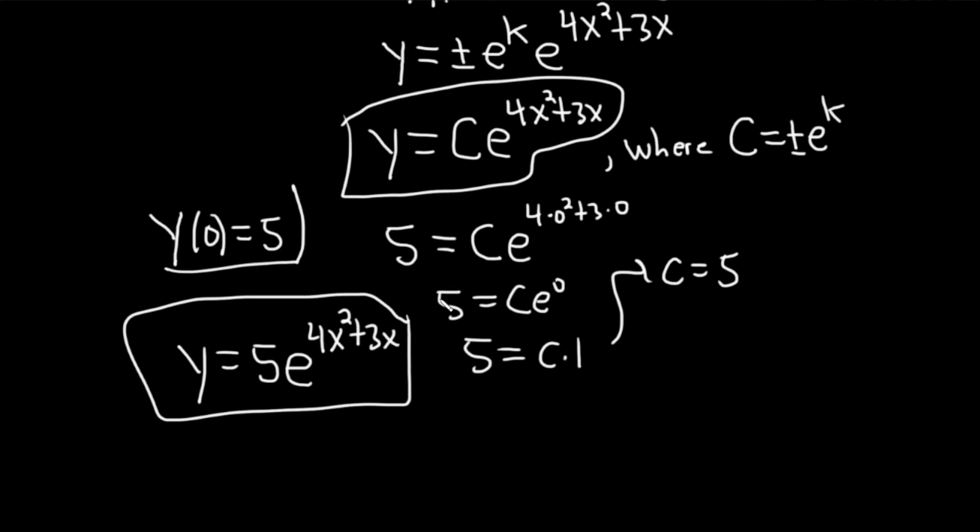So again, the answer to this particular problem is this one here without the c. And this answer here, the one we got earlier, y equals c times e to the 4x squared plus 3x. This is called the general solution. And what we've done is we've used this initial condition to pick out a specific one. This actually has another name. It's called particular solution, just extra life knowledge.